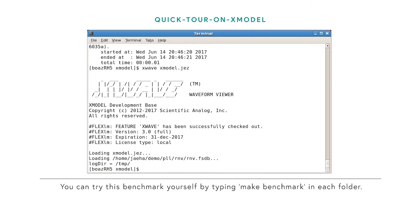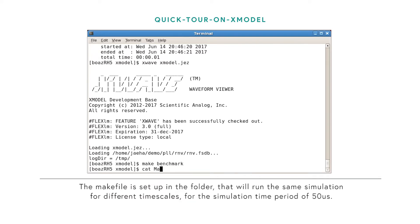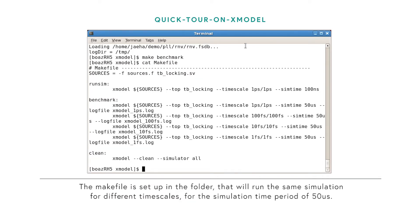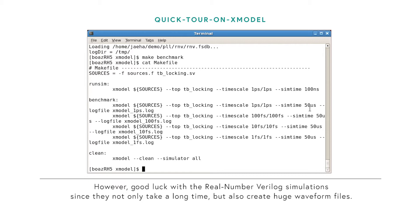You can try this benchmark yourself by typing make benchmark in each folder. The makefile is set up to run the same simulation for different time scales for a simulation time period of 50 microseconds. However, good luck with the Real Number Verilog simulations, since they not only take a very long time but also create a huge waveform file.